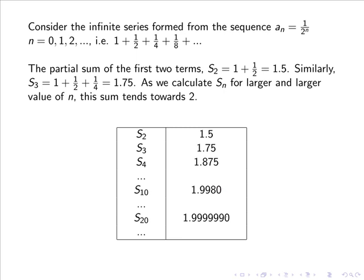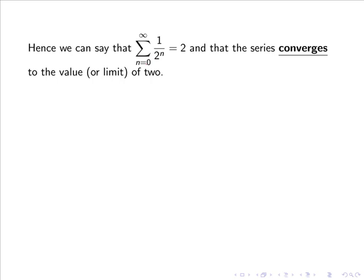In fact, as we calculate Sₙ for larger and larger values of n, this sum tends towards 2. Hence we can say that the sum from n equals 0 to infinity of 1/2ⁿ equals 2, and that the series converges to the value or the limit of 2.